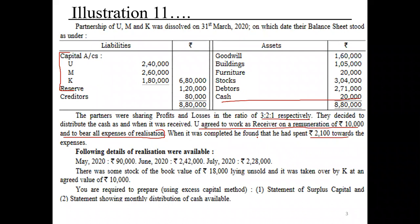Whatever expenses are incurred by U will not be recorded separately, because in the agreement it is already stated that the other partners will pay him a remuneration of 10,000 which includes the expenses he will bear.